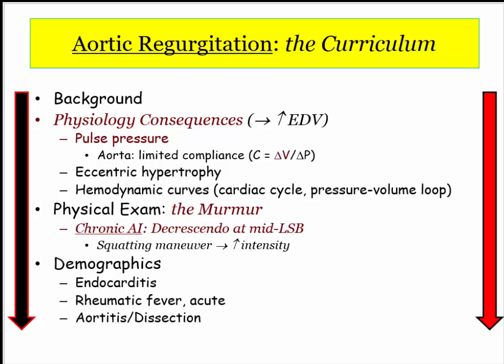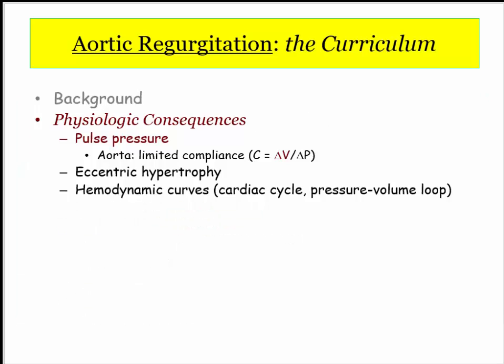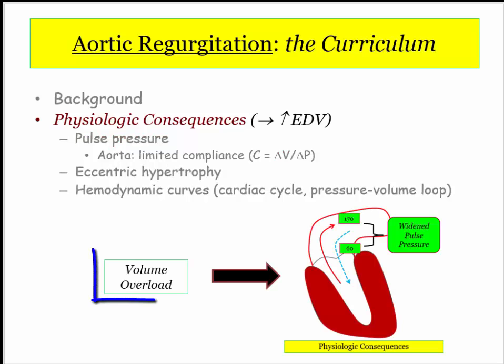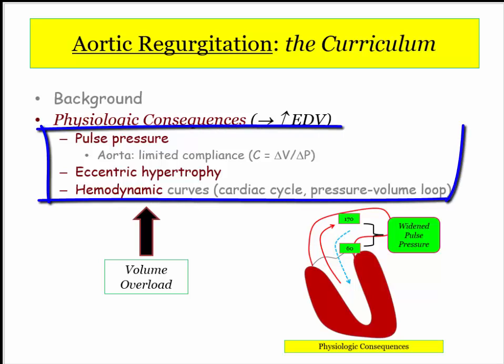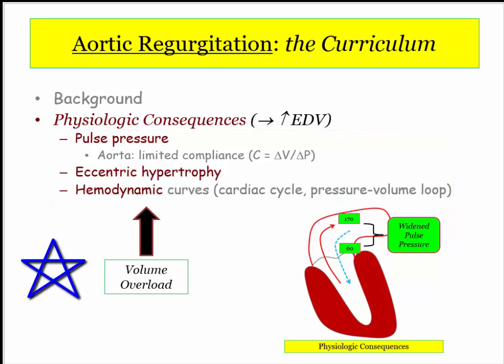Here is the roadmap we'll be using. I'm going to cover the material in order of relative importance rather than a traditional presentation. Our first stop will be the key physiologic consequences of aortic regurgitation, and these can be summarized in a word: volume overload. The key derivatives — widened pulse pressure, eccentric hypertrophy, and the hemodynamic curves — are all predictable consequences of volume overload.